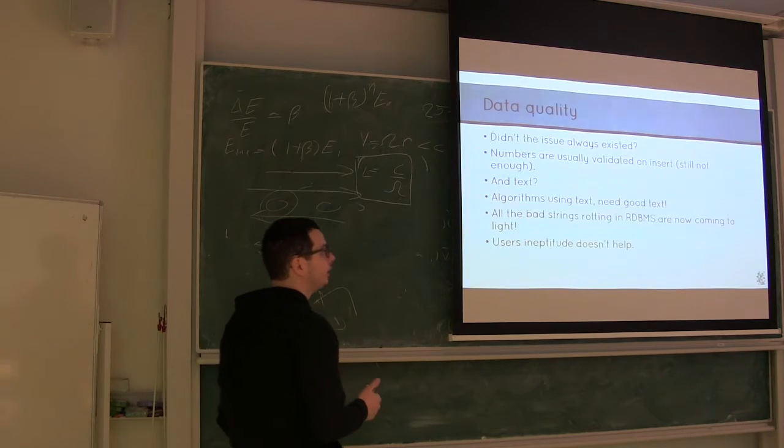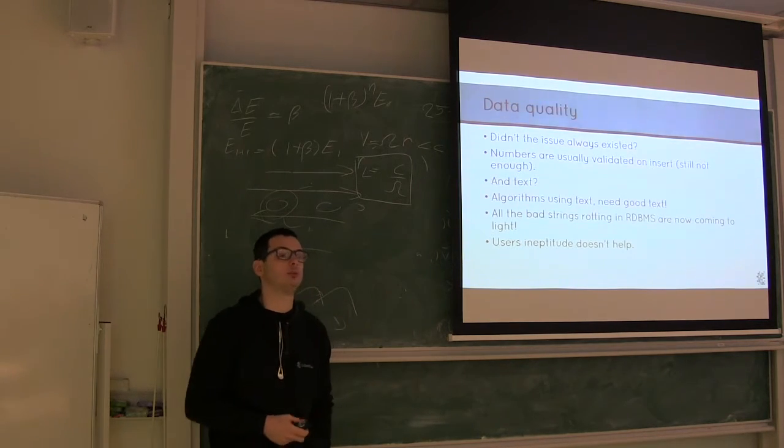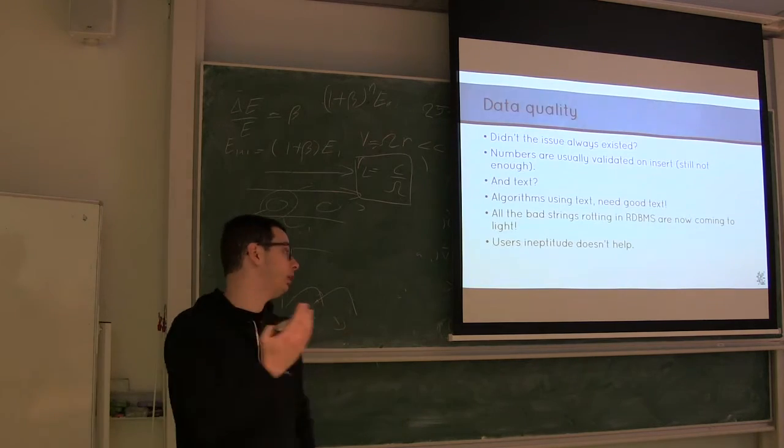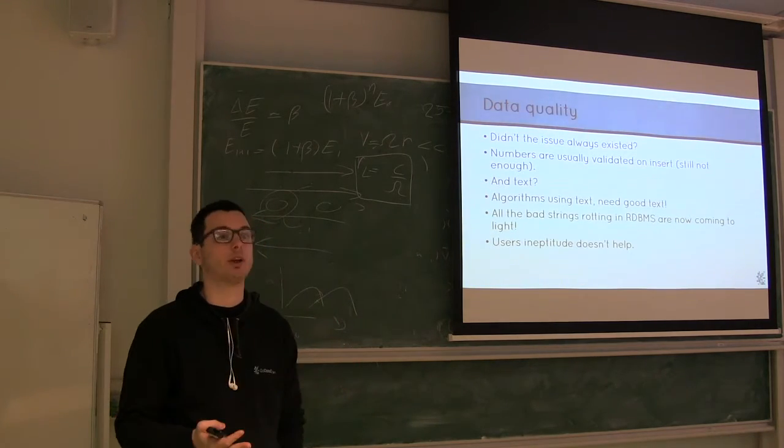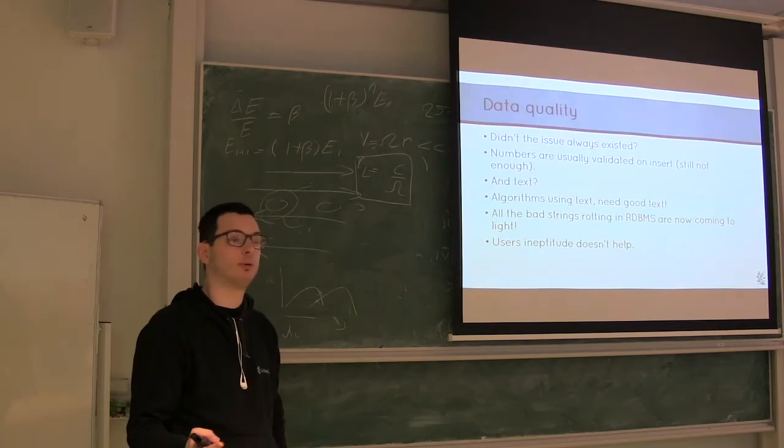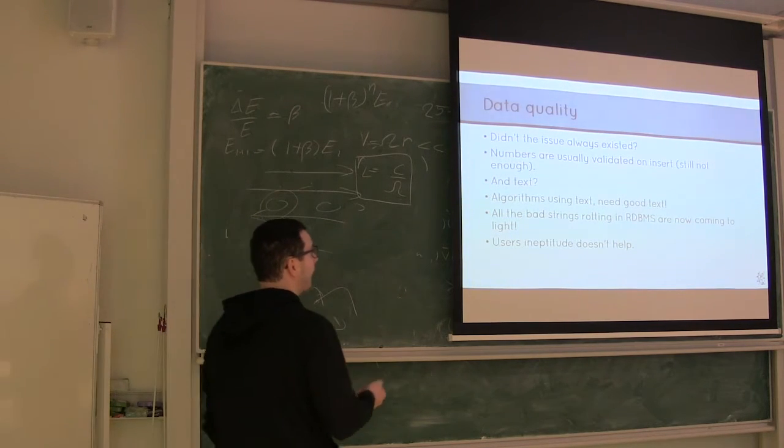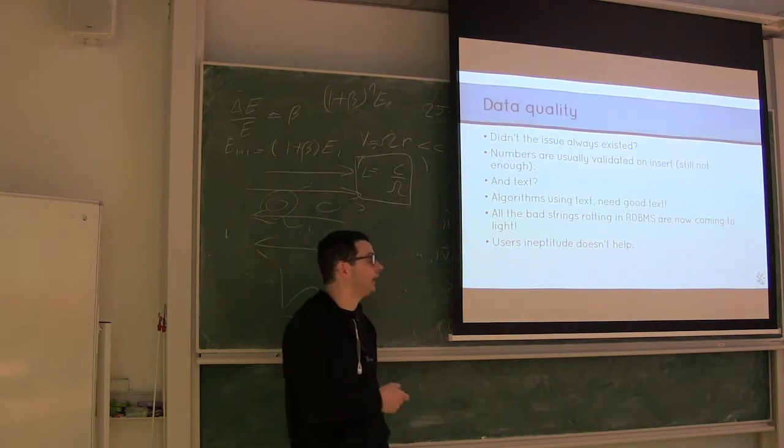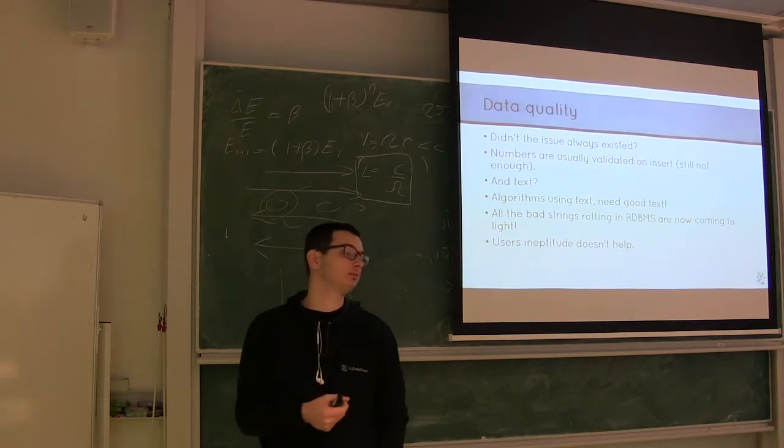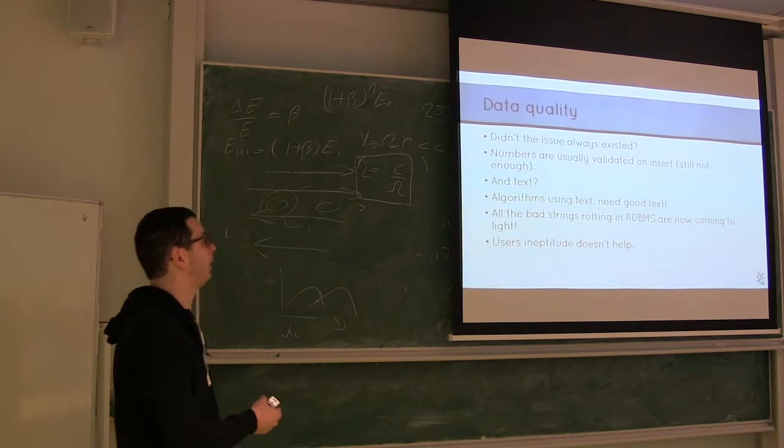But text, usually, it's not. So you put in a name, and for the database, it's just a string, and whatever you put in, it's just a valid string, usually. And a lot of machine learning algorithms use text, and they need good text. And we'll see why is that.